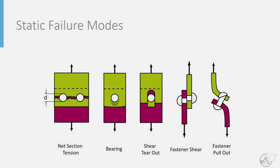In the previous videos we looked at the different failure modes under static loading for a mechanical fastener joint: net section tension, bearing, shear tearout, fastener shear, and fastener pullout. In this video we are going to develop simple analytical models for predicting the onset of these failure modes.